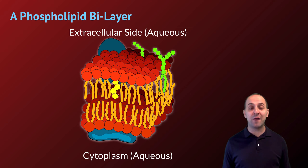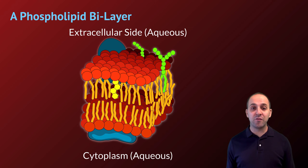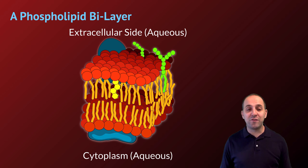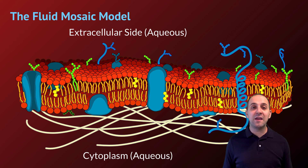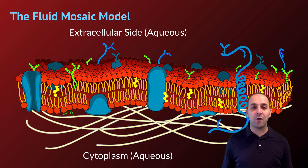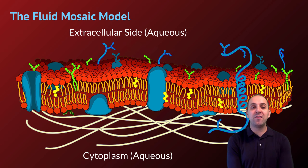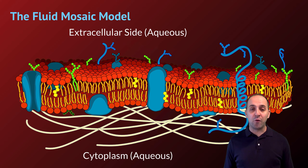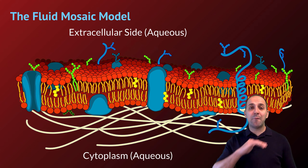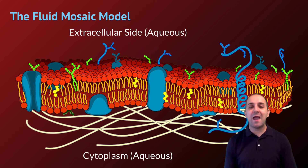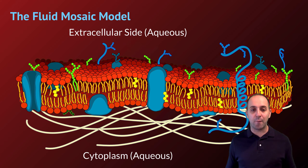It's a bilayer because there are two different layers of phospholipids oriented into the stable structure that you see in this image. But of course, the cell membrane is not just phospholipids — there are a bunch of other parts that are put together in order to make the functional cell membrane. The overall model of the cell membrane is referred to as the fluid mosaic model. Fluid meaning everything in the cell membrane is fluid within the plane of the membrane — structures in the membrane can move around inside of the bilayer. And it's a mosaic because it's a structure composed out of many different individual subcomponents.